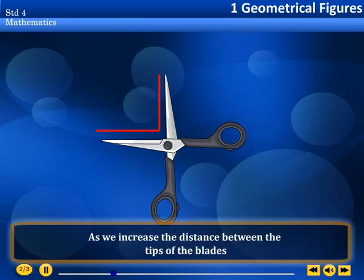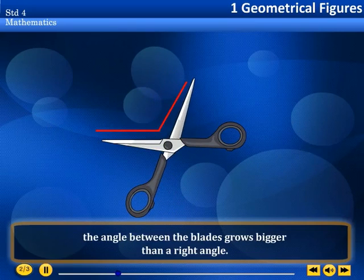Obtuse angle. As we increase the distance between the tips of the blades, the angle between the blades grows bigger than a right angle. An angle that is bigger than a right angle is called an obtuse angle.